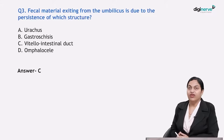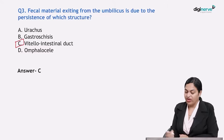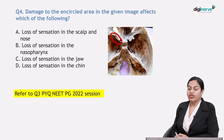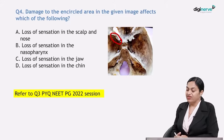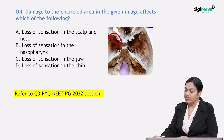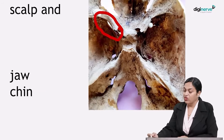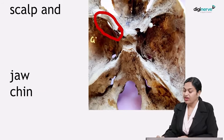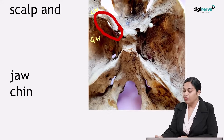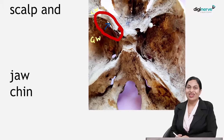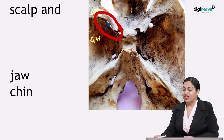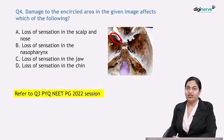So the answer is that fecal material exiting from the umbilicus is due to persistence of the vitelointestinal duct. Moving on to the fourth question: damage to the encircled area in the given image affects which of the following? The circled area shows the greater wing and lesser wing of sphenoid — inserting a probe through that opening enters the orbit. This is the superior orbital fissure.